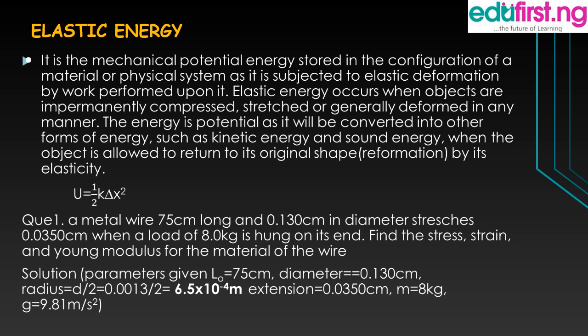Let's solve some examples. Question one: A wire 75 centimeters long and 0.130 centimeters in diameter stretches 0.0350 centimeters when a load of 8.0 kg is hung on its end. Find the stress, the strain, and the Young's modulus for the material. We are given the original length as 75 centimeters, the diameter as 0.130 centimeters. The radius equals half the diameter, so the radius is 6.5 times 10 to the power minus 4 meters when converted. The extension is 0.0350 centimeters and the mass is 8 kilograms.